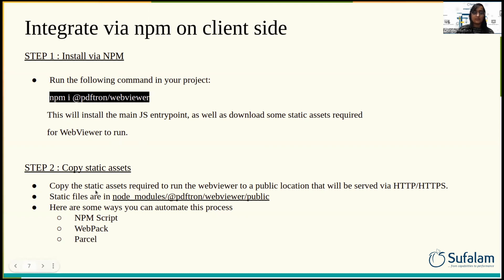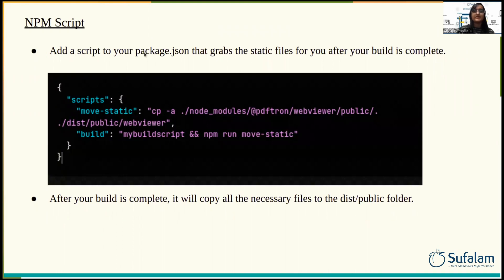In the second step, you have to copy the static assets required to run the PDF viewer to a public location that will be served via HTTP or HTTPS. This is a static file in node_modules/pdftron-webviewer/public folder. Here are some ways you can automate this process. You can automate via npm script by adding a script to your package.json that grabs the static files after your build is complete, copying all necessary files to the public folder.